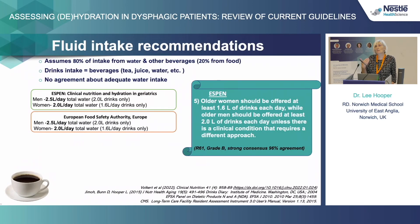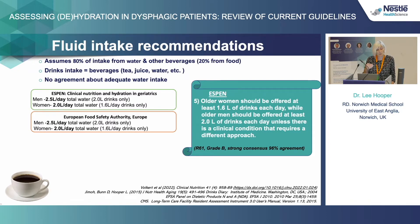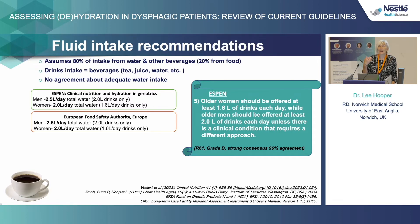So how much should older people drink? We've got two sets of guidelines in Europe. The first is the ESPEN Clinical Nutrition and Hydration in Geriatrics, and the second is the European Food Safety Authority — they tell us the same thing. Older men should drink at least two litres of drinks a day, on top of the fluid they get from food. Older women should drink at least 1.6 litres a day, again on top of what they get from food. And working with older adults, it's really clear that if you want people to drink that much, you've got to offer them a lot more than that.